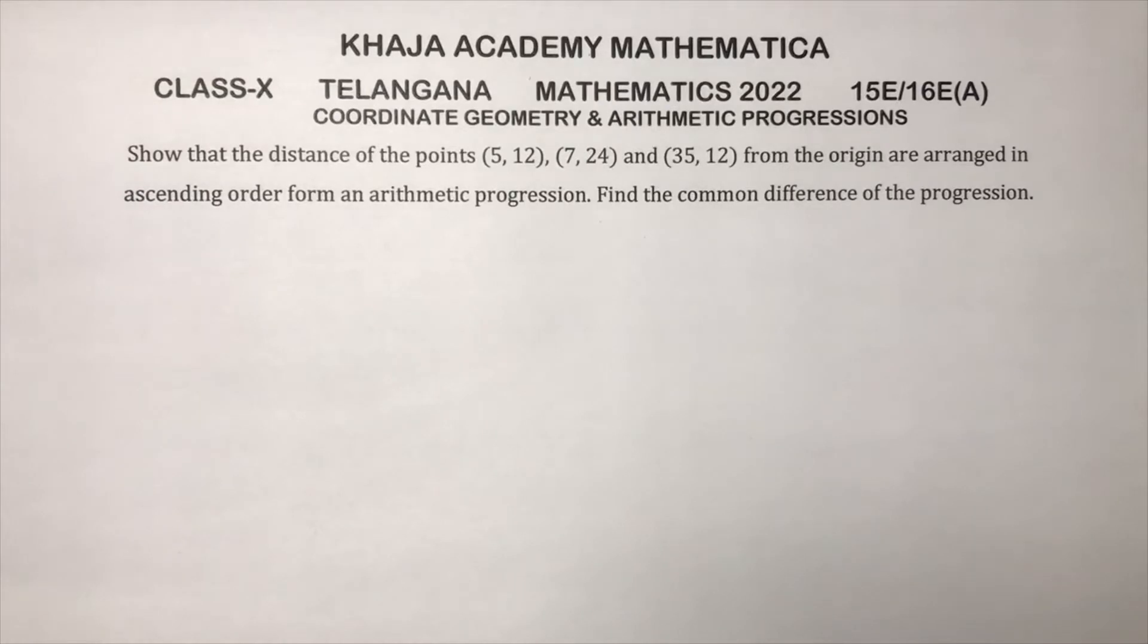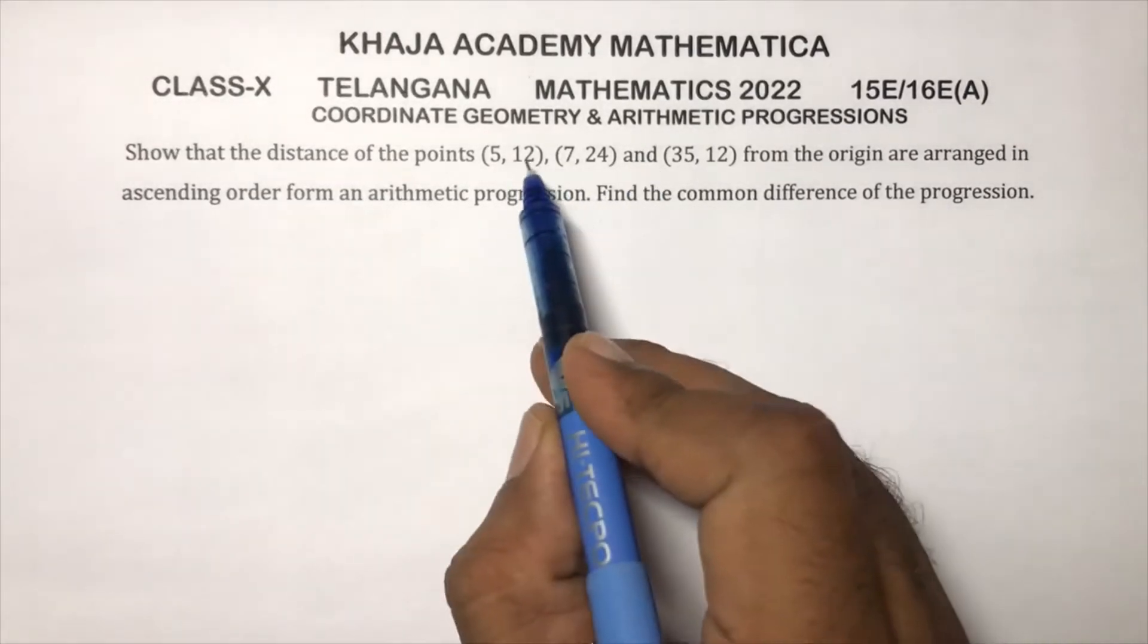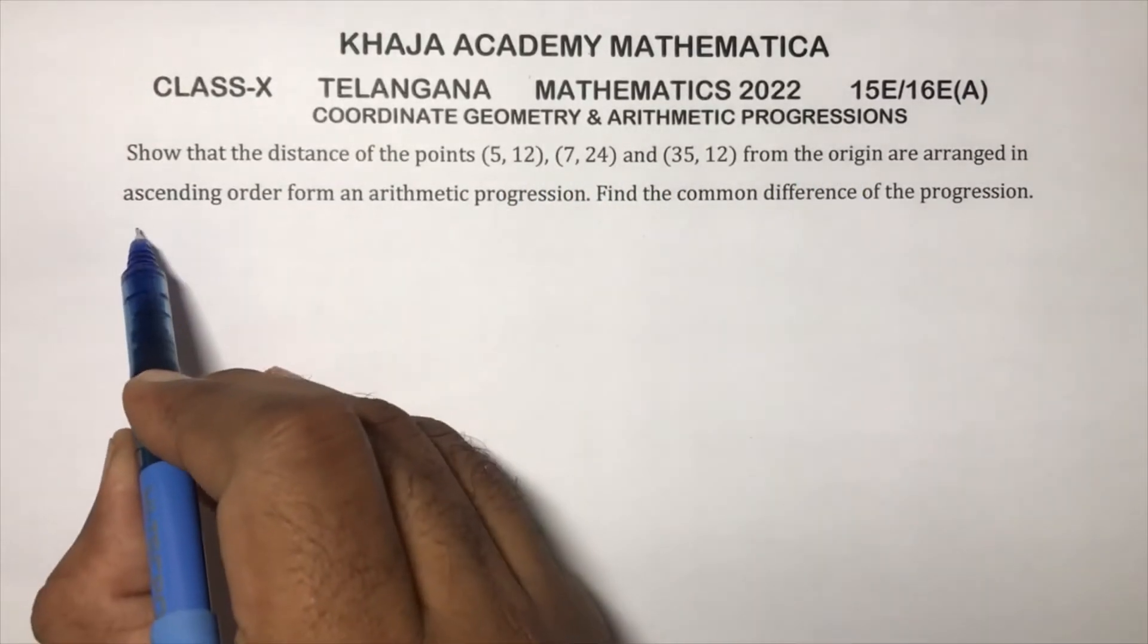Show that the distance of the points (5, 12), (7, 24), and (35, 12) from the origin are arranged in ascending order and form an arithmetic progression. Now here, the distance of these three points from origin, so first I will calculate the distances.